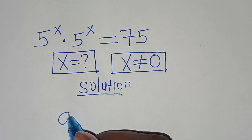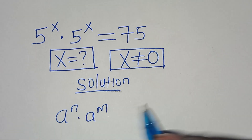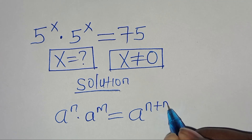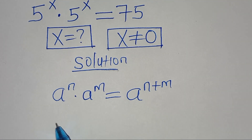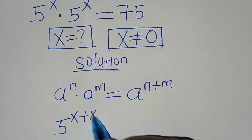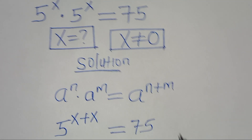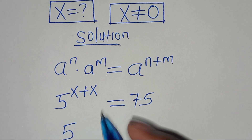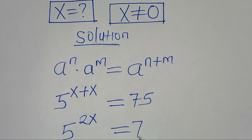This exponential equation is in the form of a^n times a^m, which we can express as a^(n+m). Applying this exponential property, we have 5 to the power of x plus x, which is 5^(2x), and this is equal to 75.